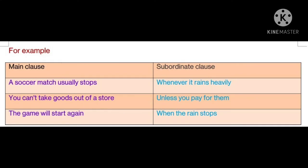For example: A soccer match usually stops whenever it rains heavily. The main clause 'A soccer match usually stops' stands by itself and does not need the help of any other words. But 'whenever it rains heavily' is an incomplete sentence which needs the help of other words. Another example: You can't take goods out of a store unless you pay for them. The main clause is 'you can't take goods out of a store', and 'unless you pay for them' is the subordinating clause which needs the main clause to give its meaning.